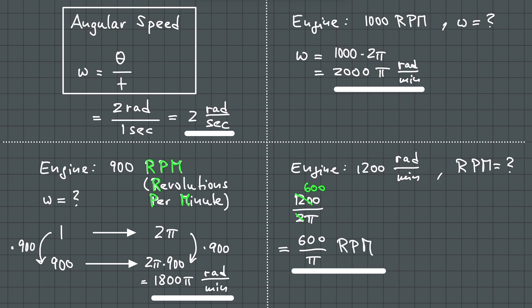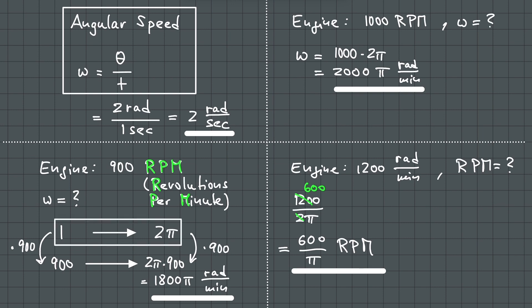The only thing we have to memorize here is that 1 revolution per time unit is 2 pi per time unit. I highly recommend memorizing this as soon as possible.